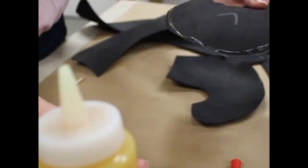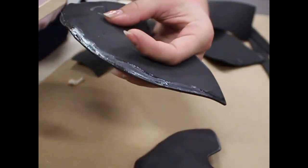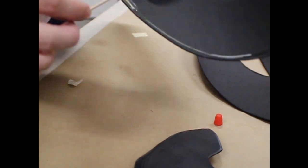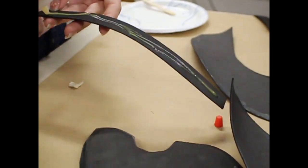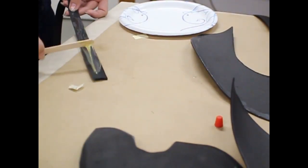Apply contact cement to the top edge of the side pieces, both sides of the center pieces, as well as the long strips. Once all the glue has dried.